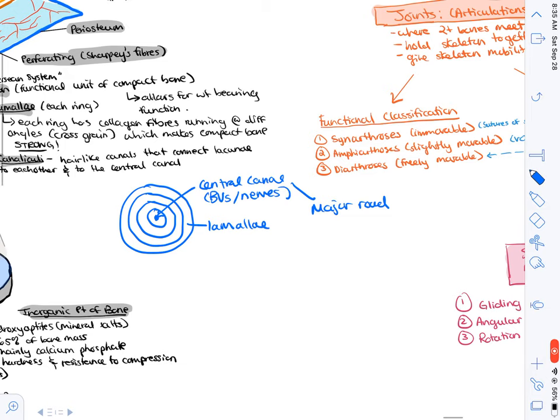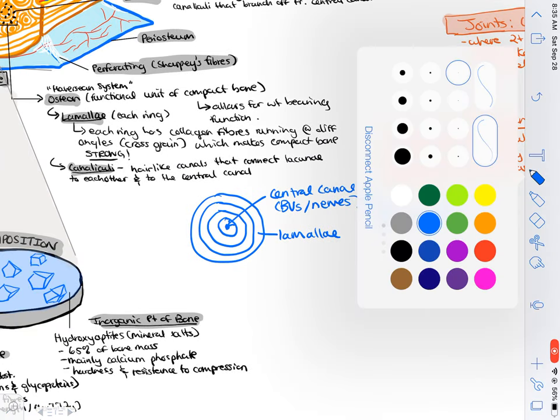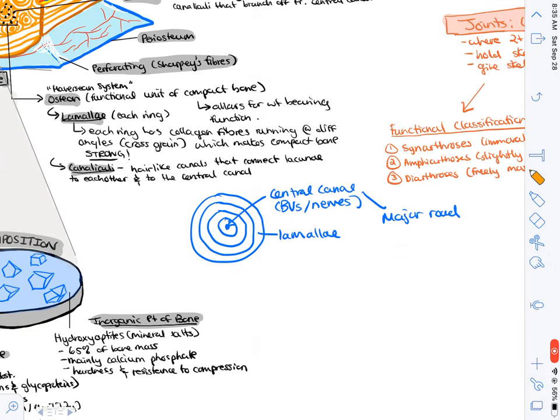We talked about the fact that there are bone cells in this osteon, so where are they? Well, they're in these things called lacunae. Lacunae basically is just like a little house that the osteocyte, the mature bone cell, resides in.